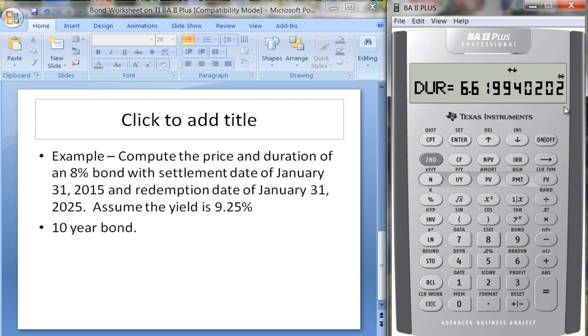If we scroll down here, we can also see that the duration is 6.2 years. So this is actually kind of a handy tool to have, this bond worksheet. The tricky part is just figuring out how to put in the redemption date. It took me a while to figure it out—I had to look through the manual. I tried one dash, that didn't work very well. But it's 1.31 and then 25, and then you hit enter.